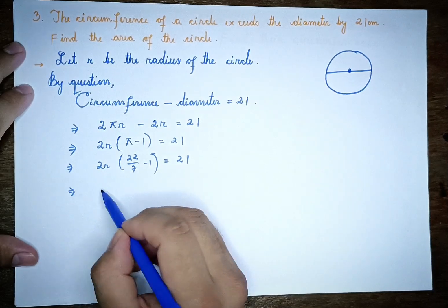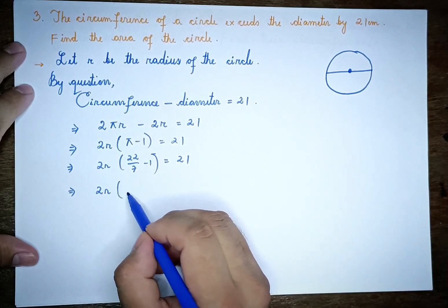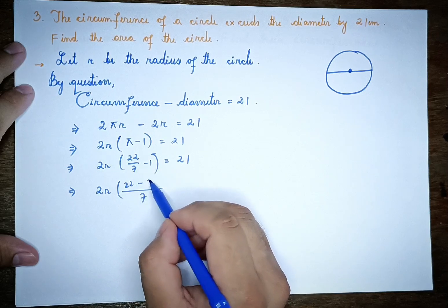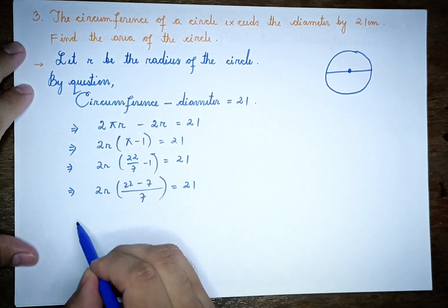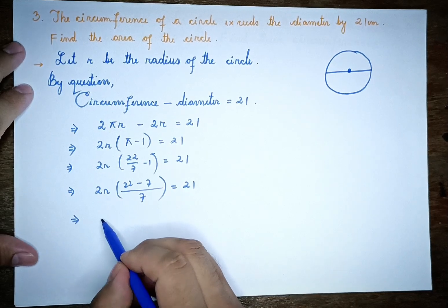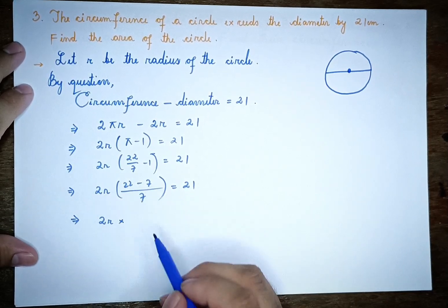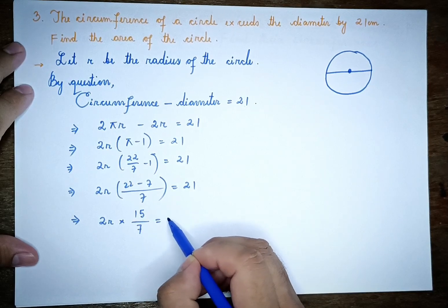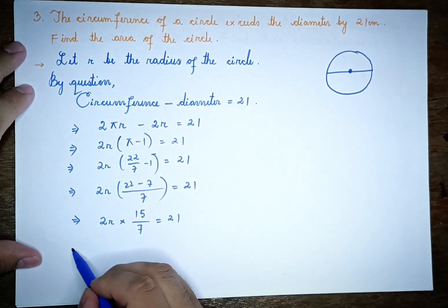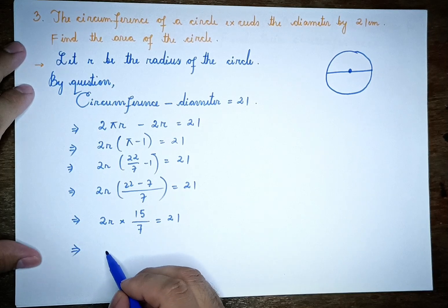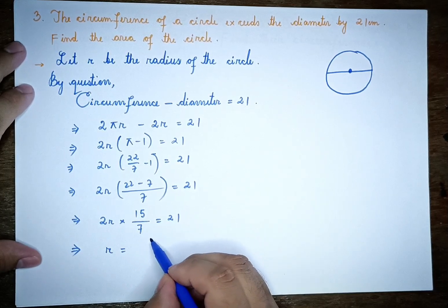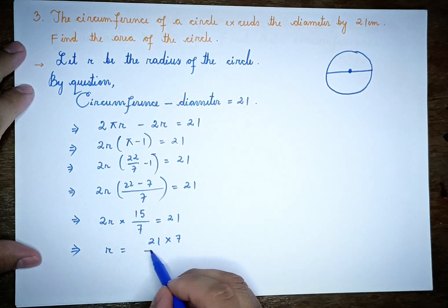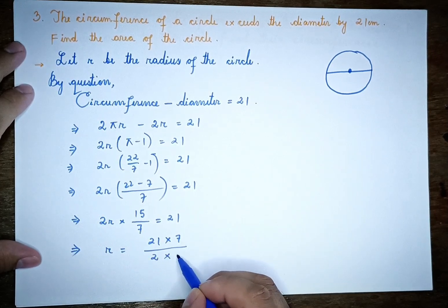Simplifying: 22 minus 7 is 15, so 2r times (15/7) equals 21. Therefore r equals 21 times 7, divided by 2 times 15.